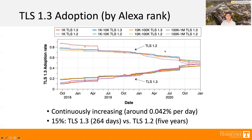TLS 1.3 reached 50% adoption rate in around 264 days — around April. However, for TLS 1.2, the shift from TLS 1.1 to TLS 1.2 took around five years to reach 50% adoption. So TLS 1.3 adoption at around 300 days is significantly faster than TLS 1.2 at five years.